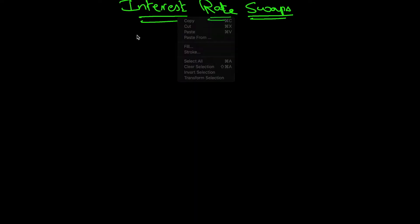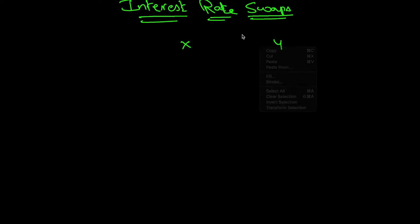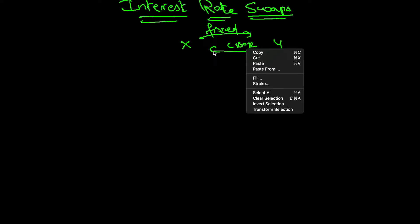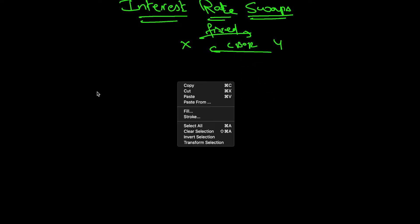Interest rate swaps — the typical example we hear about is like X and Y entering into an agreement wherein X agrees to pay fixed rate and Y agrees to pay LIBOR rate. This is the example typically quoted to us, but this is not the complete picture. I'll give you one complete picture about interest rate swaps and how exactly it works.